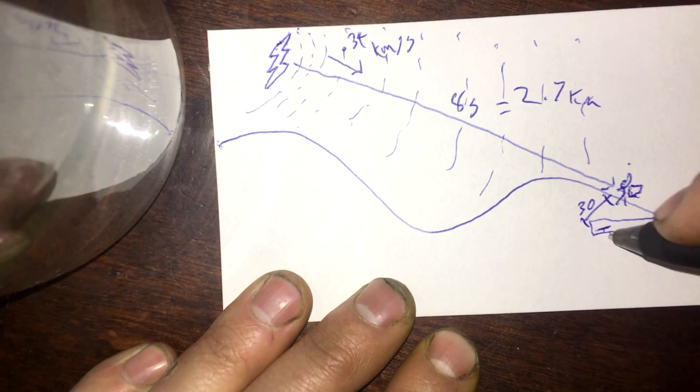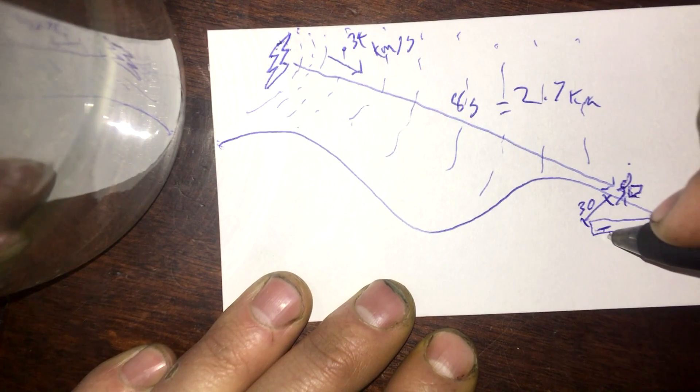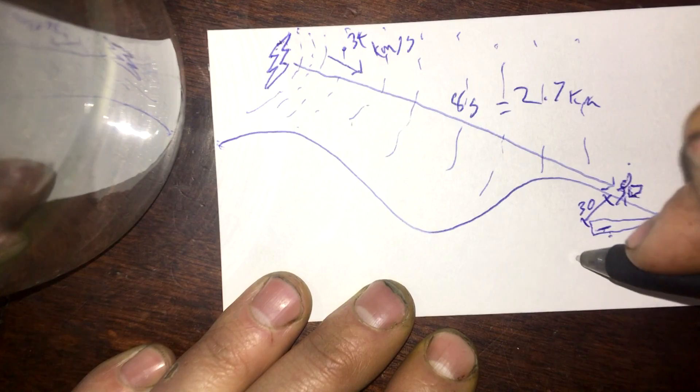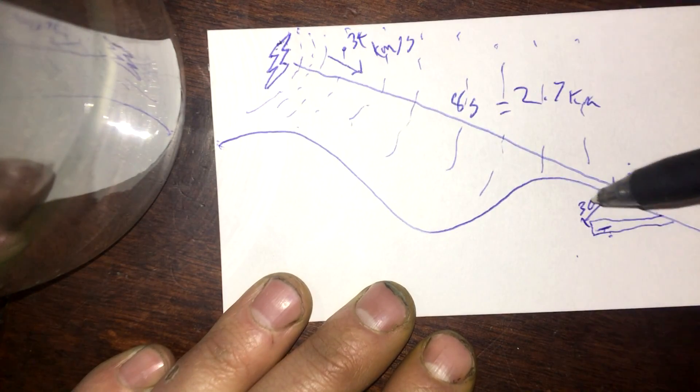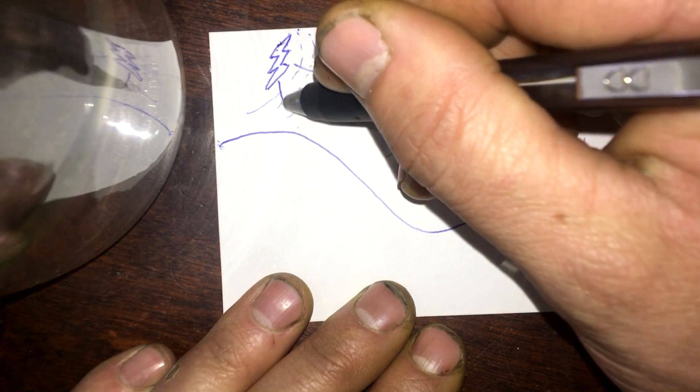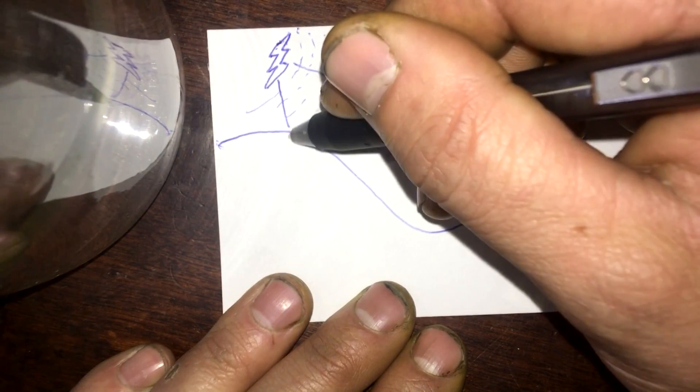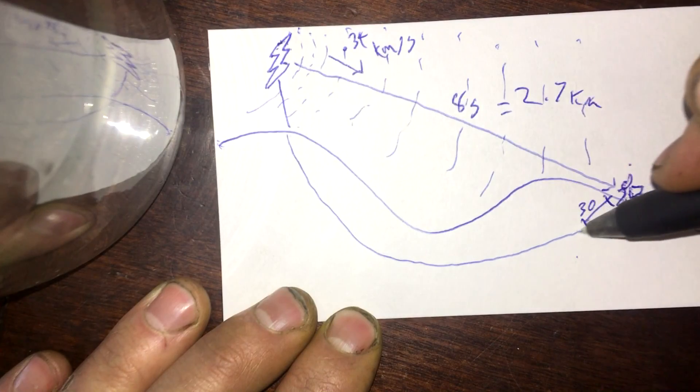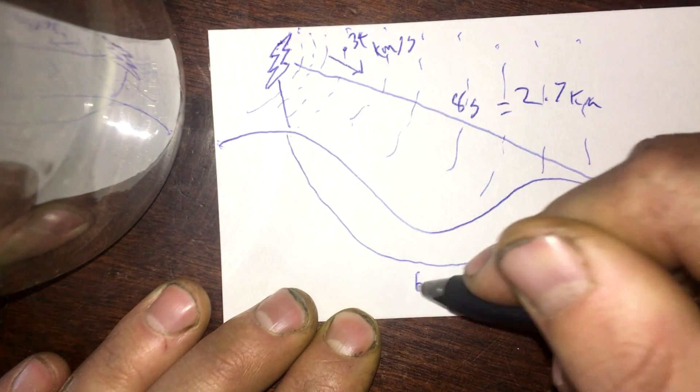But remember, this camera down here picked up some noise before this one did. In fact, it only took six seconds. That path must have looked like this. So the sound comes down from the lightning, impacts the ground, and then goes around this valley, and then up and reaches this. And this only takes six seconds.